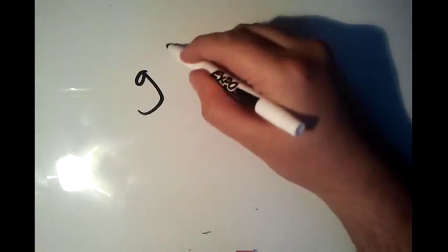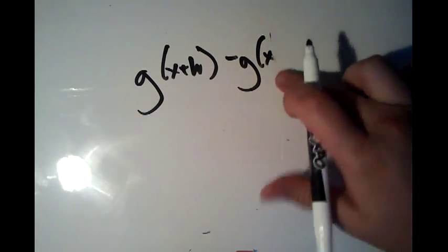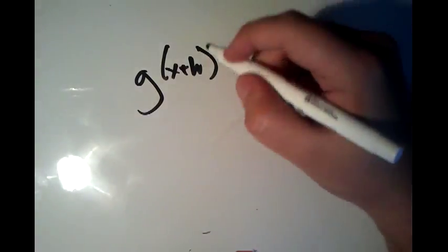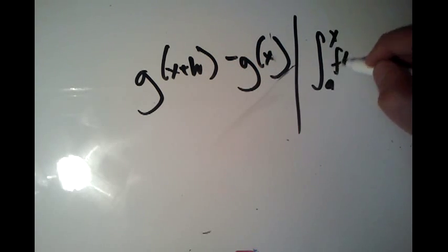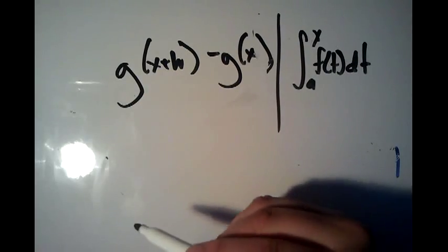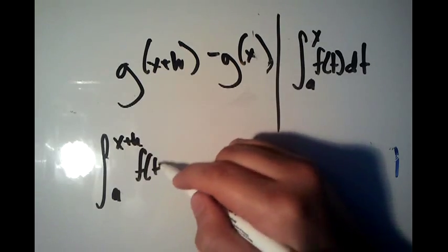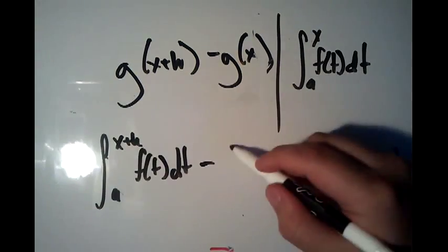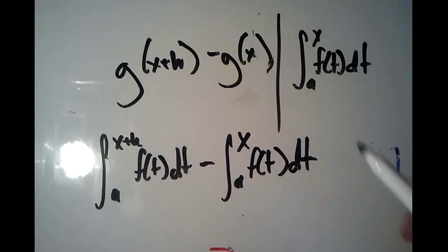Let's go ahead and attempt to prove it. We're going to start as we always do: we're going to take g of x plus h minus g of x, because that's how a limit begins. Remember that g of x is defined as the integral from a to x of f of t dt. So g of x plus h means you plug x plus h in, giving us the integral from a to x plus h of f of t dt.